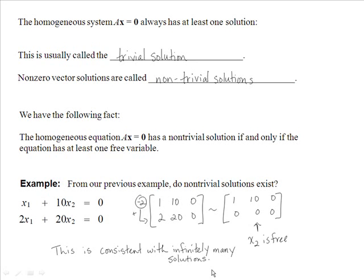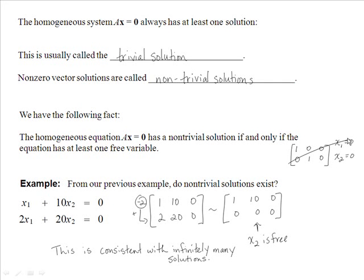If we had ended up with a pivot in every row, because the last column is zeros, we would have x1 equals 0 and x2 equals 0 — the trivial solution, just the zero vector. Since we didn't have that and we do have a free variable, we know we have infinitely many solutions and a consistent system.